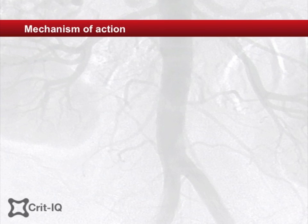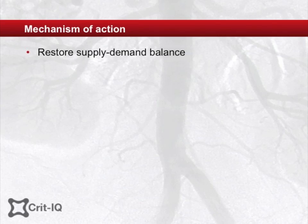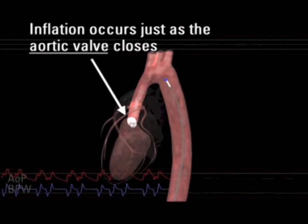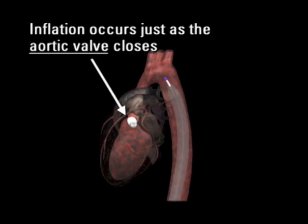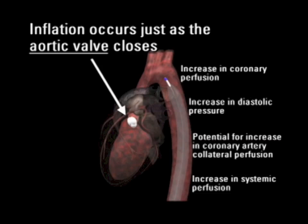Mechanism of action of the intra-aortic balloon pump. The primary goal of an intra-aortic balloon pump is to restore and maintain a balance between myocardial oxygen supply and myocardial oxygen demand. Myocardial oxygen supply is enhanced by inflating the intra-aortic balloon pump during diastole. During this time, the left ventricle is relaxed, and oxygenated blood flows through the coronary arteries. The vascular system is a closed system with a fixed volume of blood. Therefore, inflation of the balloon causes displacement of blood back towards the coronary arteries, increasing aortic diastolic pressure, and therefore myocardial oxygen supply. This is known as diastolic augmentation.